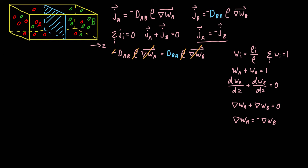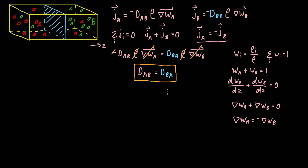What we're left with is that the diffusion coefficient of species A in the mixture AB is equal to the diffusion coefficient of species B in the mixture AB. The whole point of this is to highlight that the diffusion coefficient for a mixture is constant irrespective of the species. Even if you have a single type of species, its diffusion coefficient will vary depending on the environment it finds itself in, and every species in that environment will have the same effective diffusion coefficient.